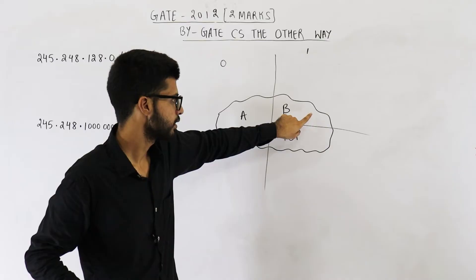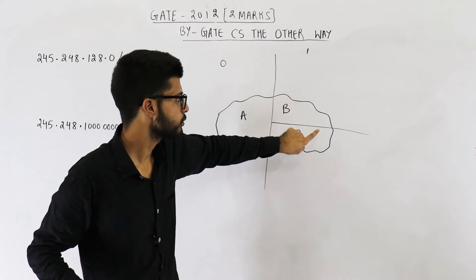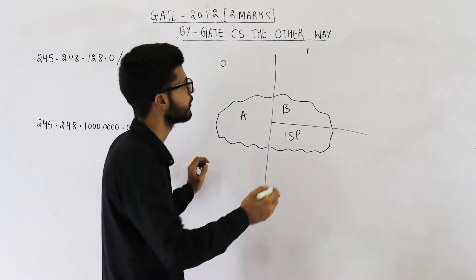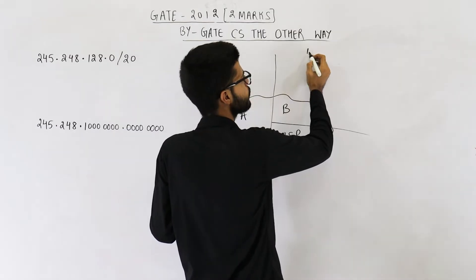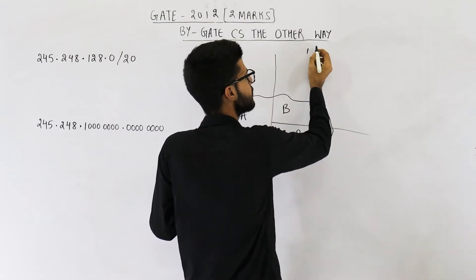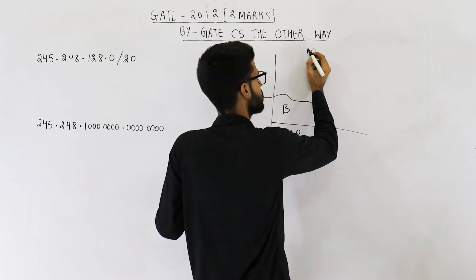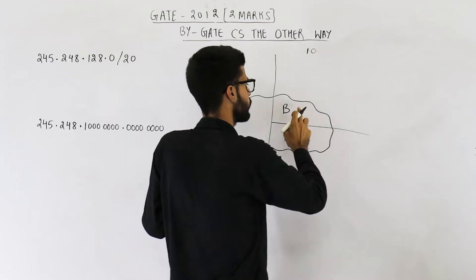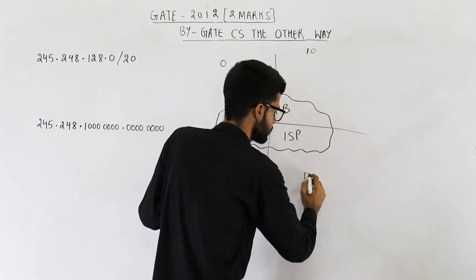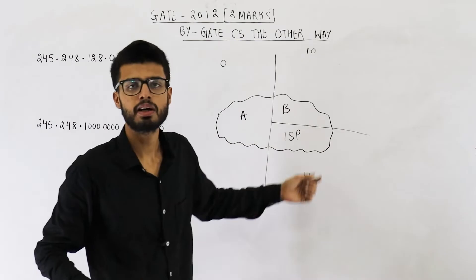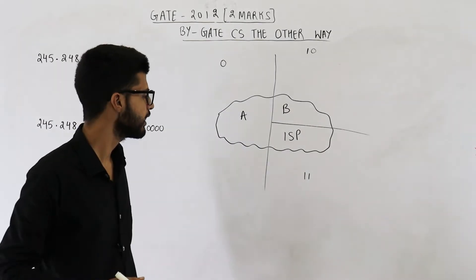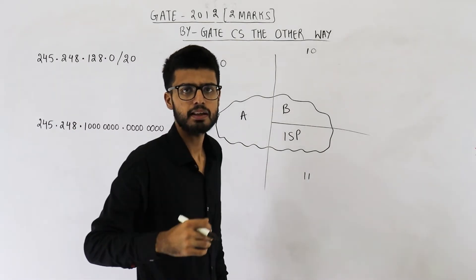Now to distinguish between one part or the other, we need one more bit. So if the value of that first bit is one, we will also analyze the next bit. If the next bit is zero, we are talking about one subnet; if the next bit is one, then we are talking about the other subnet. Let me explain.